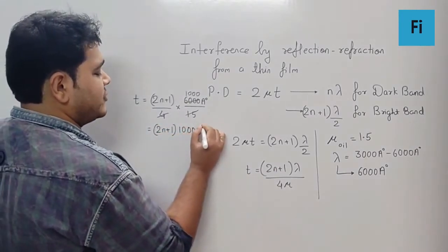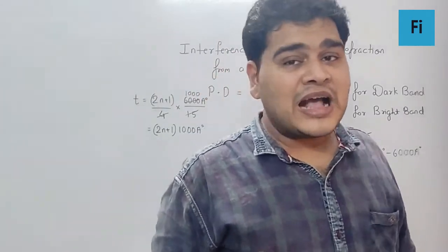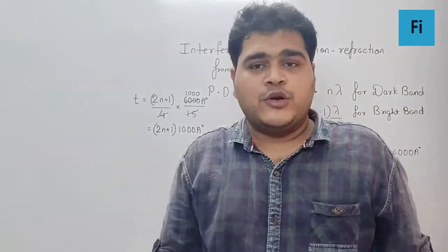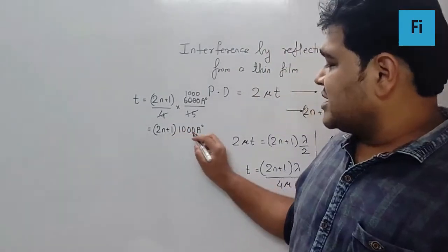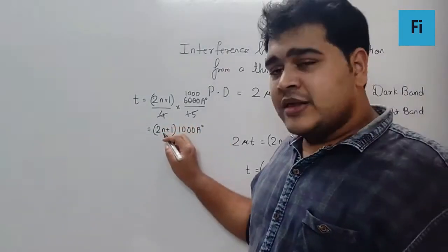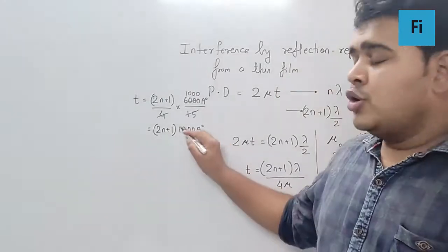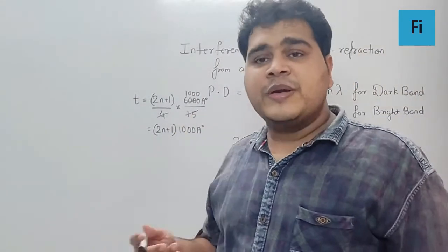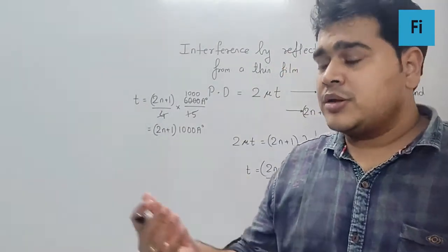Now we know the value of n has to be greater than 1, but the minimum value you can have is 0. So if it is 0 then it is 1000 Å, if it is 1 then it becomes 2 plus 1, 3000 Å, if it is 2 it becomes 5000 Å and so on. So can I say the thickness minimum is definitely 1000 Å?